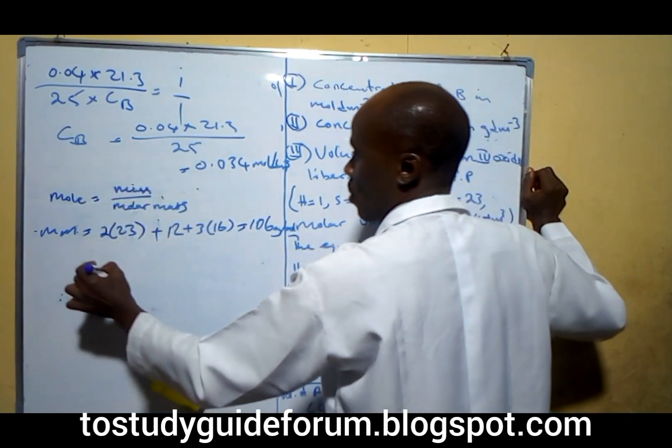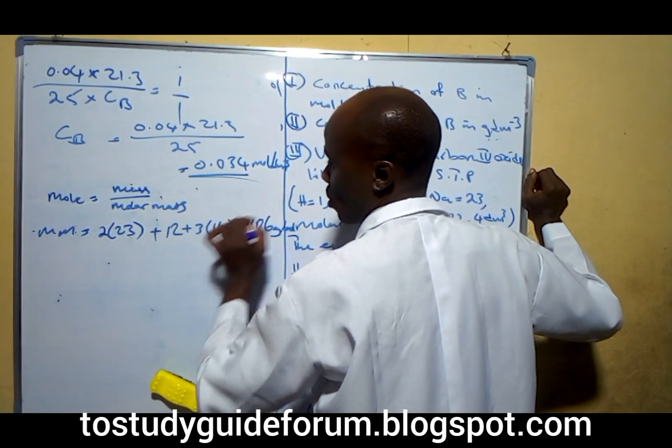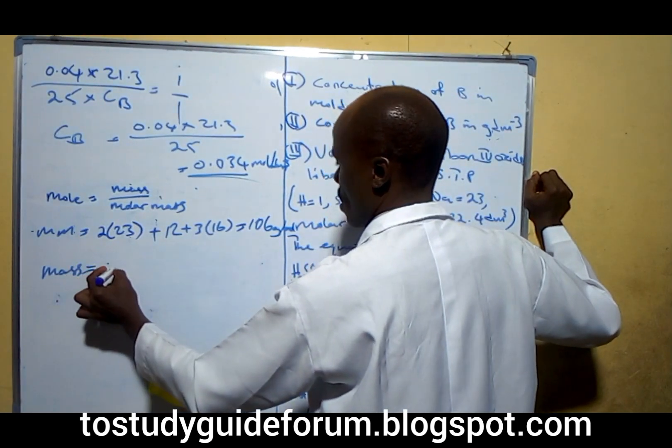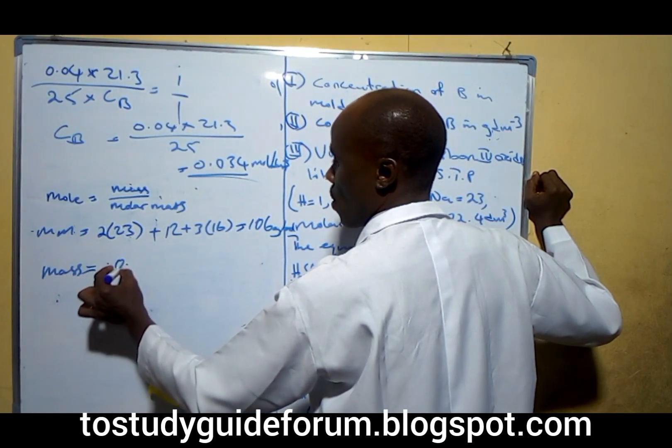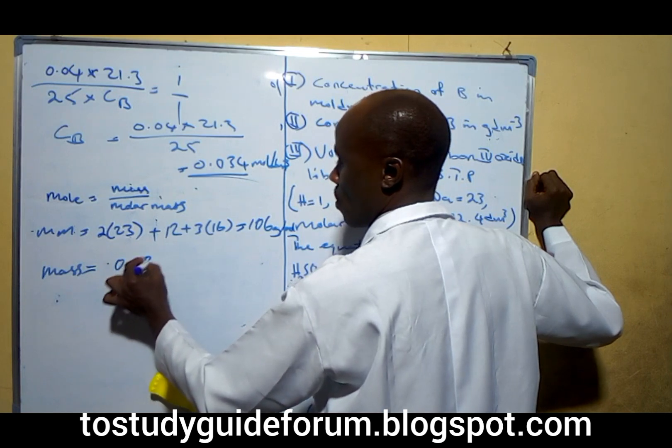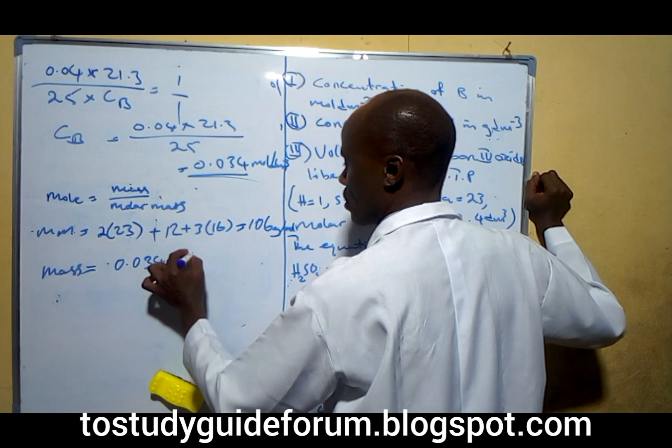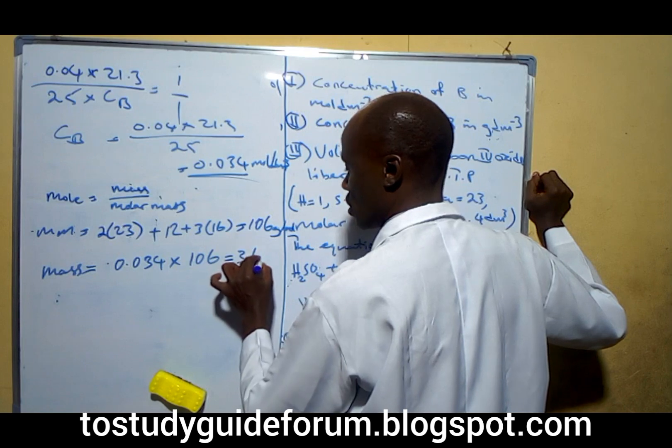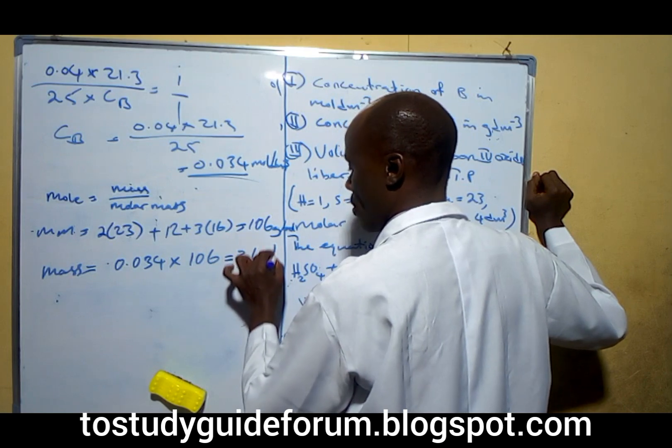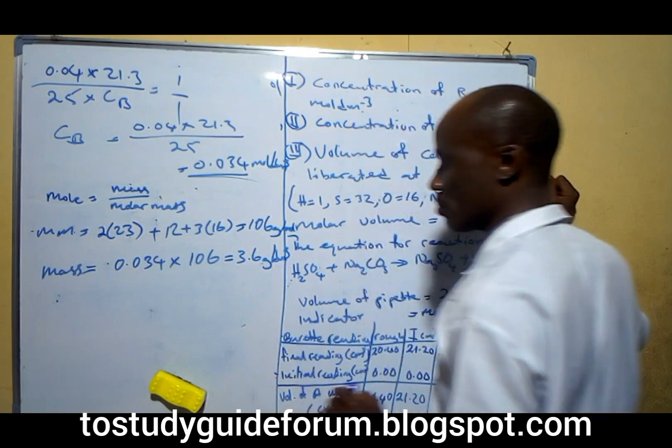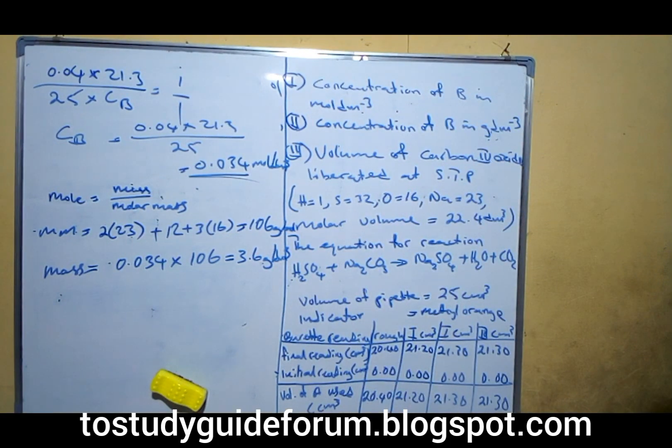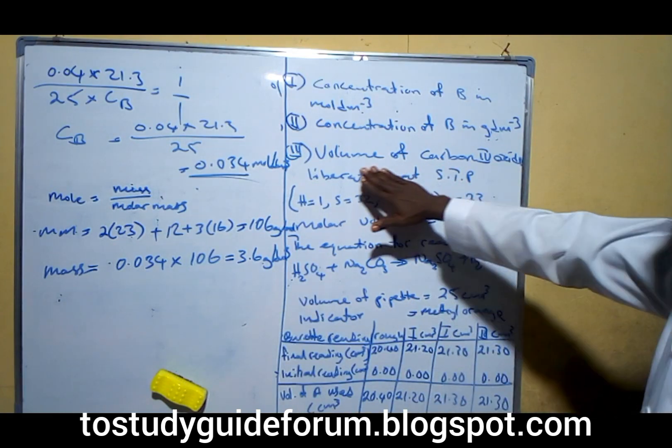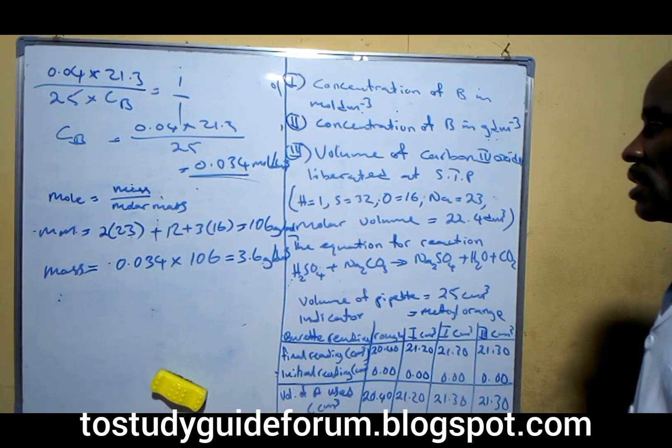Now we know that our mole is already the mole concentration. Making mass the subject of the formula, we have it to be 0.034 times 106. That will give us 3.6 grams per dm³, approximately. That is the mass concentration. The next one is to calculate the volume of carbon (IV) oxide liberated at STP.